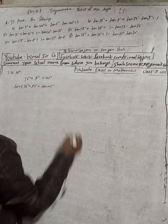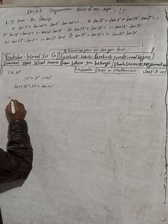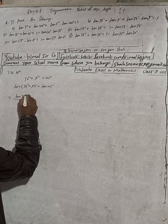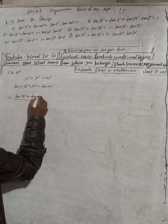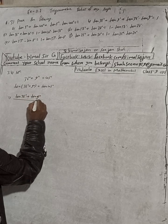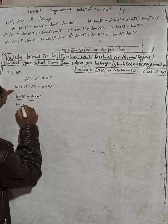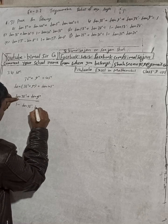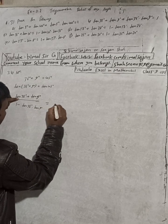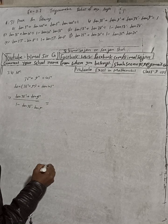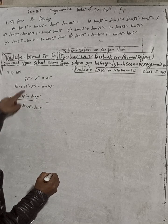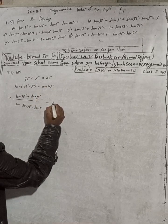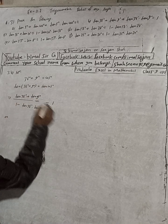Now apply the tan(A + B) formula: tan36° + tan9° divided by 1 − tan36°·tan9° = tan45°. Here A = 36° and B = 9°. The value of tan45° is 1. Now cross multiply.